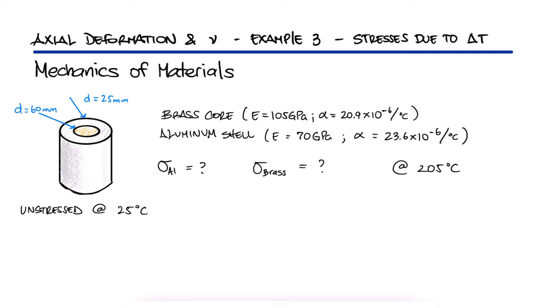However, because of the higher thermal expansion coefficient of the aluminum, you would expect the aluminum to expand more than the brass. But since the shell and the core are fully bonded, the aluminum shell is trying to stretch the brass core and the brass core is holding back the aluminum expansion.